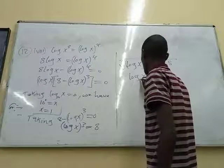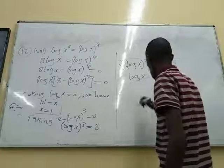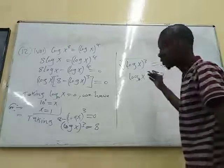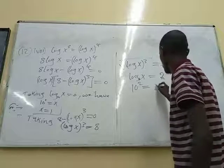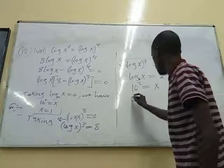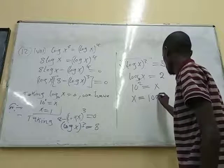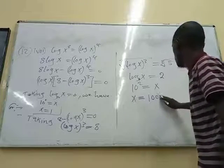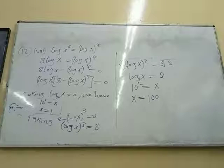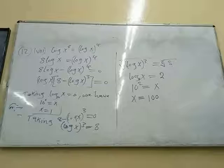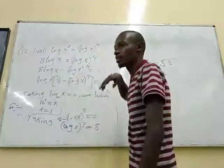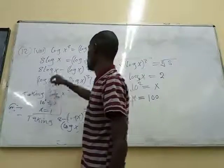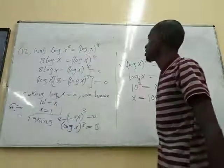So here now we can say, since this has the base 10, we can change this to exponential. So it's going to be 10 raised to power 2 being equal to x. So our value of x would just be equal to 100. So this is how we solve such questions. So if you have a calculator, you can try to put 100 there. See what you are going to get. Or the other value of x, which is 1. Try to put 1 there. See if you are going to get the same answer.